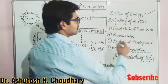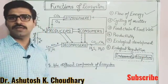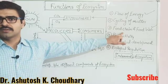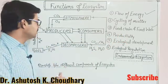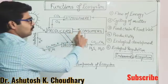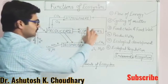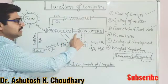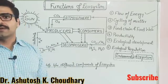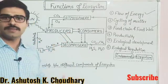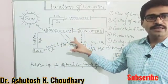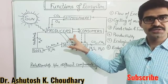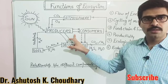This is the first function of the ecosystem — flow of energy. The solar energy stored by producers through photosynthesis passes from one level to another, from producers to consumers through the food chain. This is the second function — food chain and food web. I will explain the concept of food chain and food web in the next lecture. Along with the flow of energy, there is also the flow of matter — matter means flow of nutrients such as calcium, magnesium, potassium, sodium, and phosphorus.